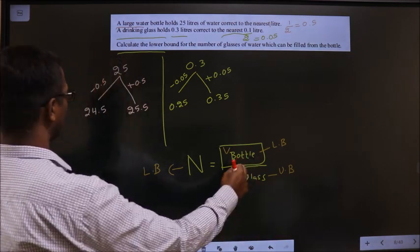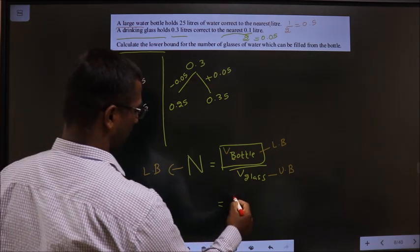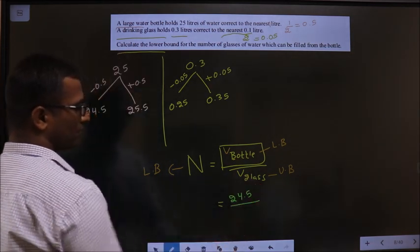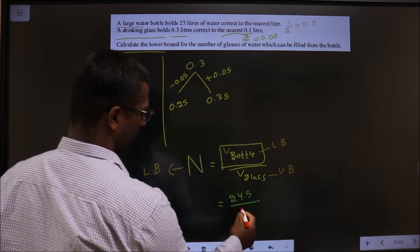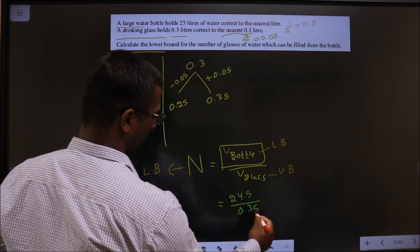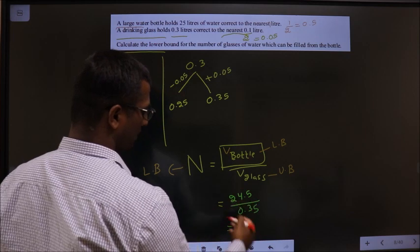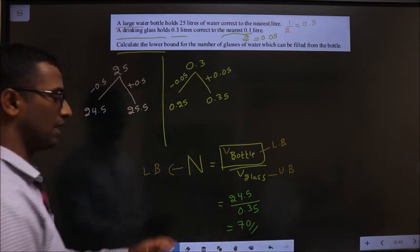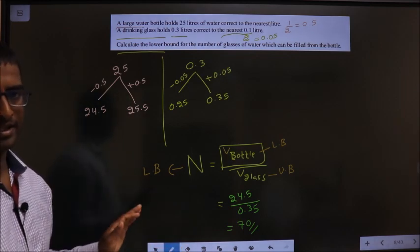Lower bound for the bottle is 24.5, and upper bound for the glass is 0.35. If you put this in the calculator, you get 70. So the lower bound for the number of glasses is 70.